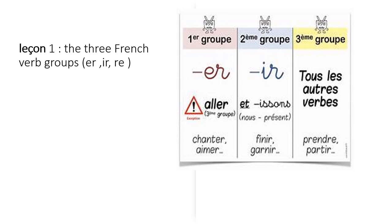Lesson 1. Leçon 1. The three French verb groups. In this lesson, we will be learning about the three French verb groups. Première, deuxième et troisième groupe de verbes. Comme exemple: aller, finir, prendre.